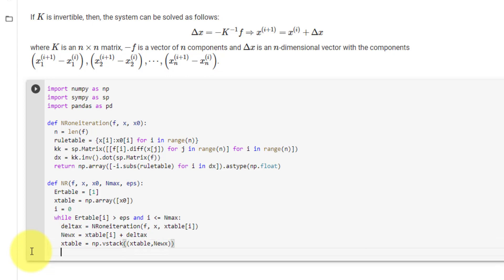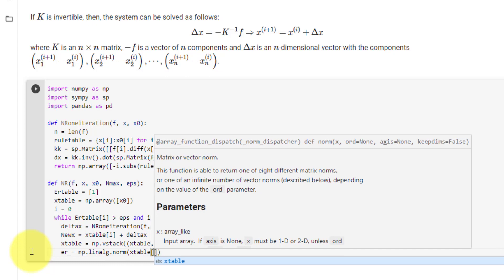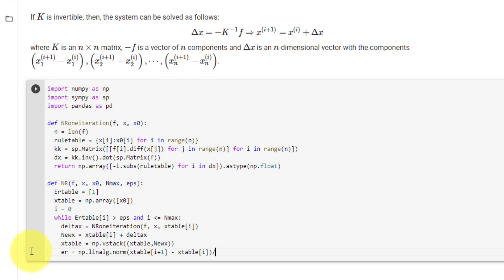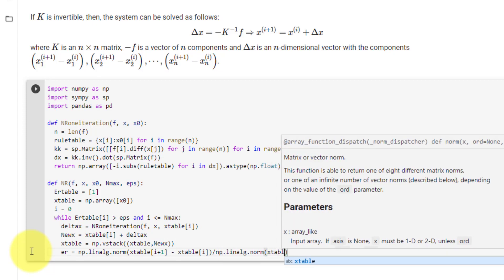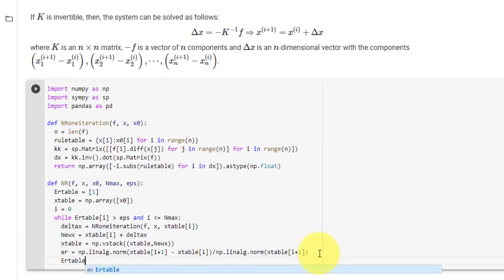Now we must calculate our error, which is er equal to numpy dot linalg dot norm of x table at i plus 1 minus x table at i divided by numpy dot linalg dot norm of x table at i plus 1. Then we must append our er to our er table using numpy dot vstack, two round brackets, er table, comma, er. Finally increment i by 1.